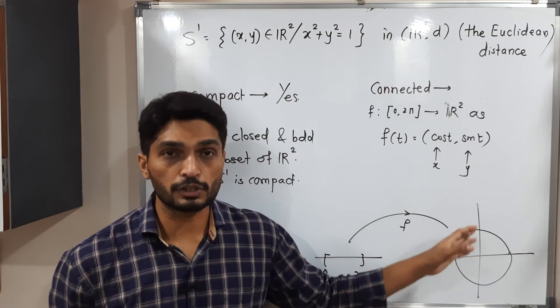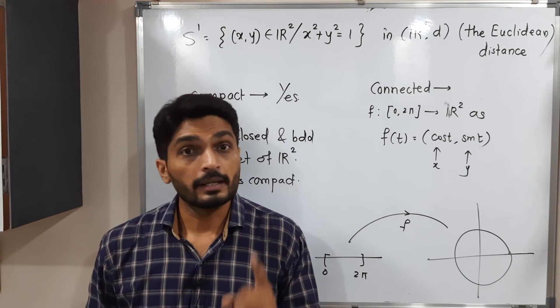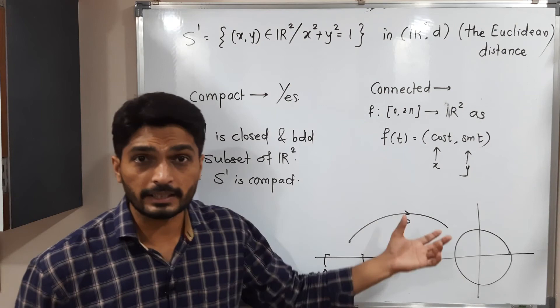Second thing, this function is clearly continuous. This set closed interval 0 to 2 pi is an interval and we know that in R every interval is a connected set. It is connected. Function is continuous. Continuous image of connected set is connected. So that's why this set S1 is connected.